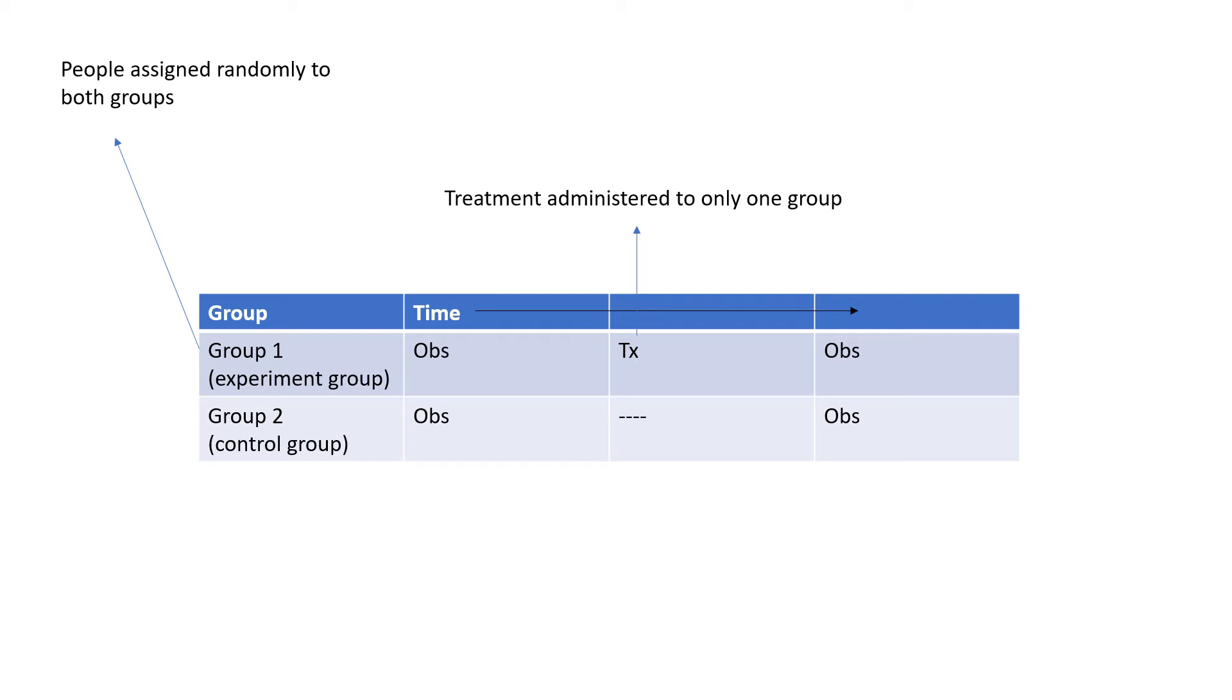Now, why am I discussing this? So that I can compare this to the Solomon four-group design, because one potential problem in this design is that the process of observing or assessing people before administering the experimental treatment may in and of itself influence how people respond to the treatment. For instance, perhaps the pre-test increases people's motivation; it makes them want to benefit from the treatment they receive.